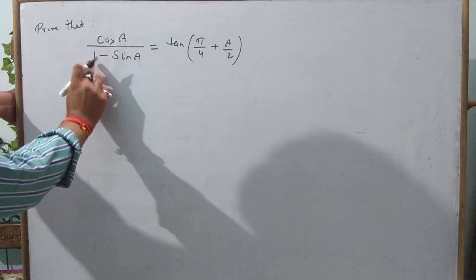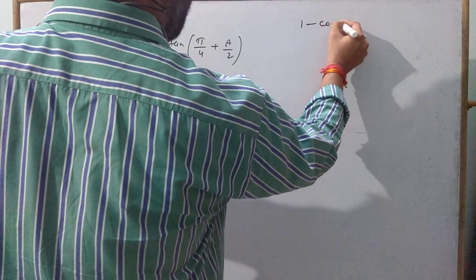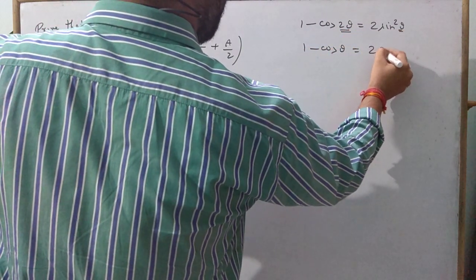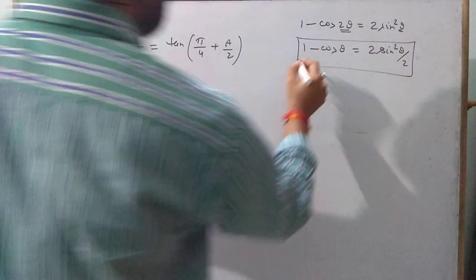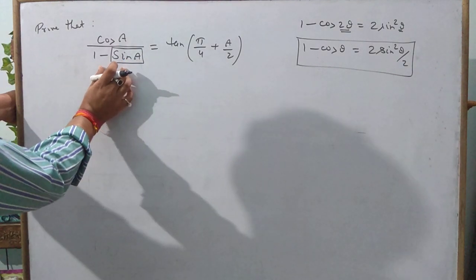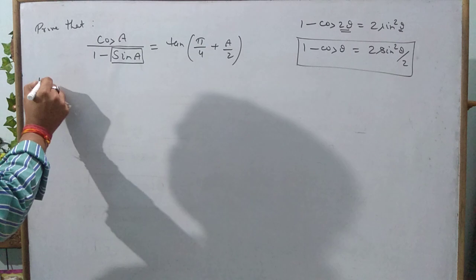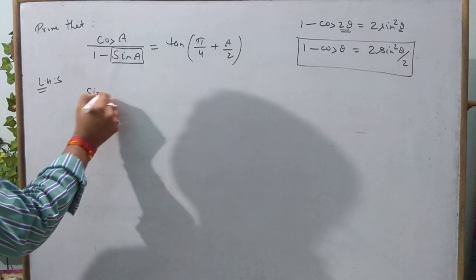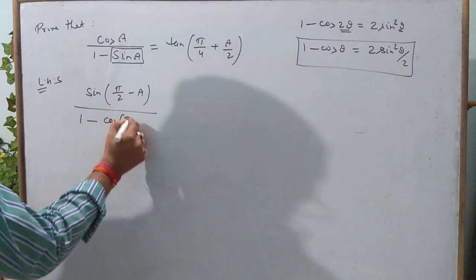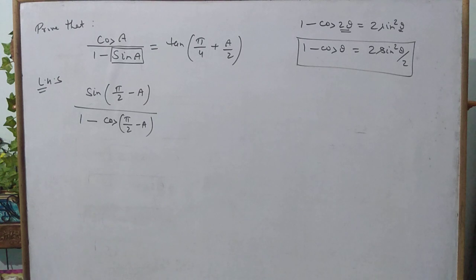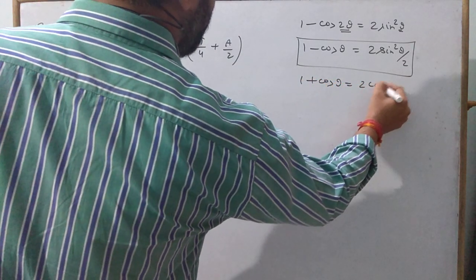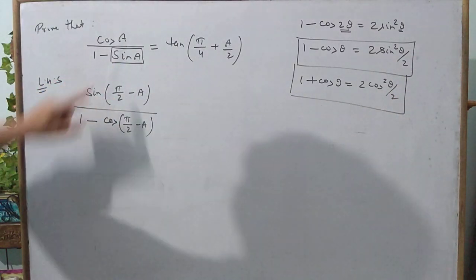If it were 1 − cosA, we know 1 − cos2θ = 2sin²θ, so 1 − cosθ = 2sin²(θ/2). But here it is 1 − sinA. If we can convert sinA to cosA, then the formula 1 − cosθ = 2sin²(θ/2) can be applied. So taking LHS, cosA can be written as sin(π/2 − A), and 1 − sinA becomes 1 − cos(π/2 − A). We convert sin to cos because 1 ± cosθ forms a standard formula.